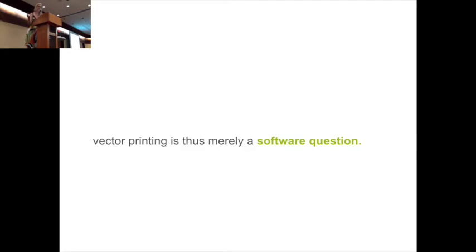We understood that vector printing is merely a software question. If you want to test vector printing on your own 3D printer at home, you only need to write a few lines of G-code. G-code are the instructions that tell the 3D printer where to move, how much material to extrude, and how fast to move.